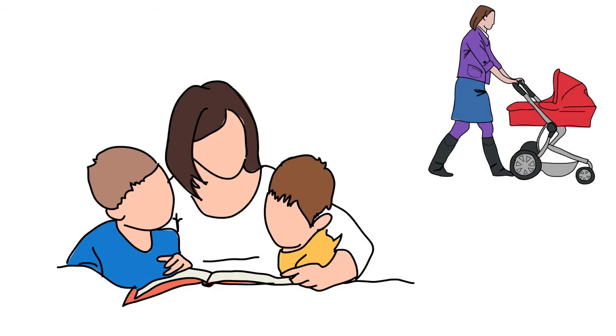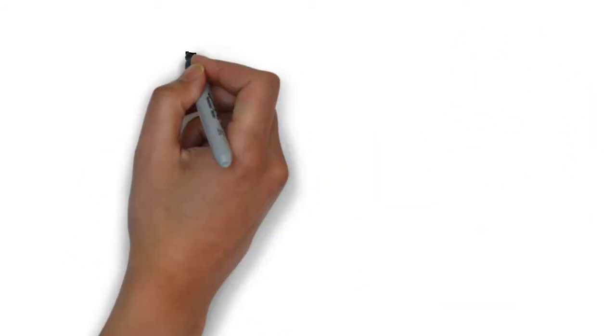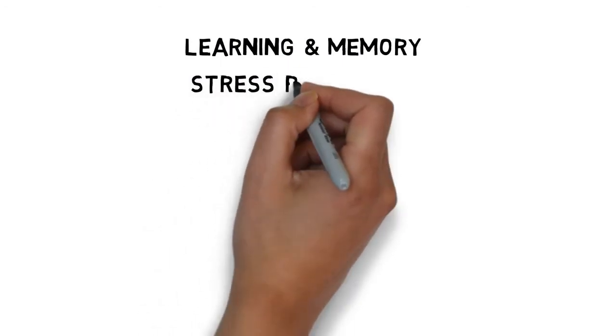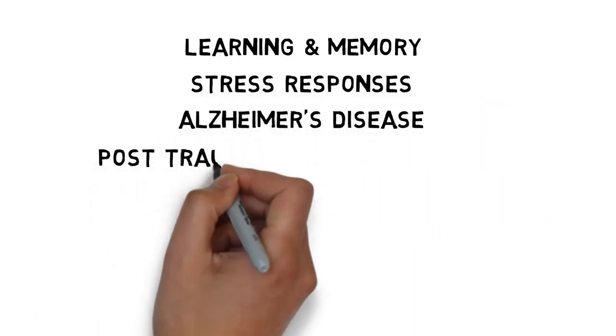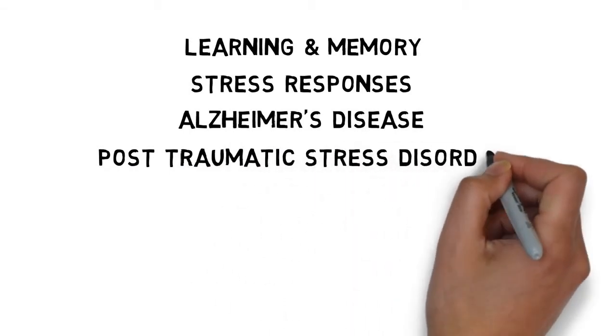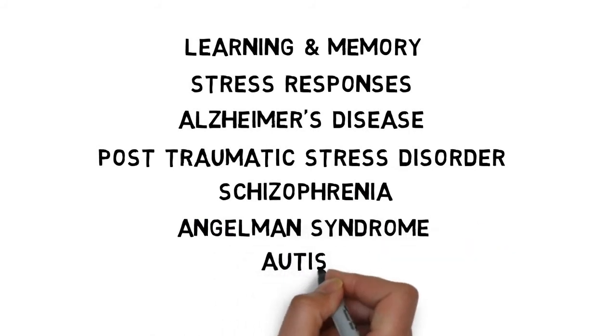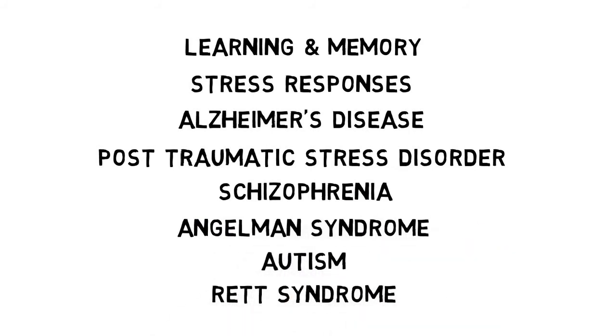Neuroepigenetic research can help unravel the meaning of these adaptations at the molecular level. Neuroepigenetic modifications are implicated in learning and memory, stress responses, Alzheimer's disease, post-traumatic stress disorder, schizophrenia, and neurodevelopmental disorders such as Angelman syndrome, autism, and Rett syndrome.